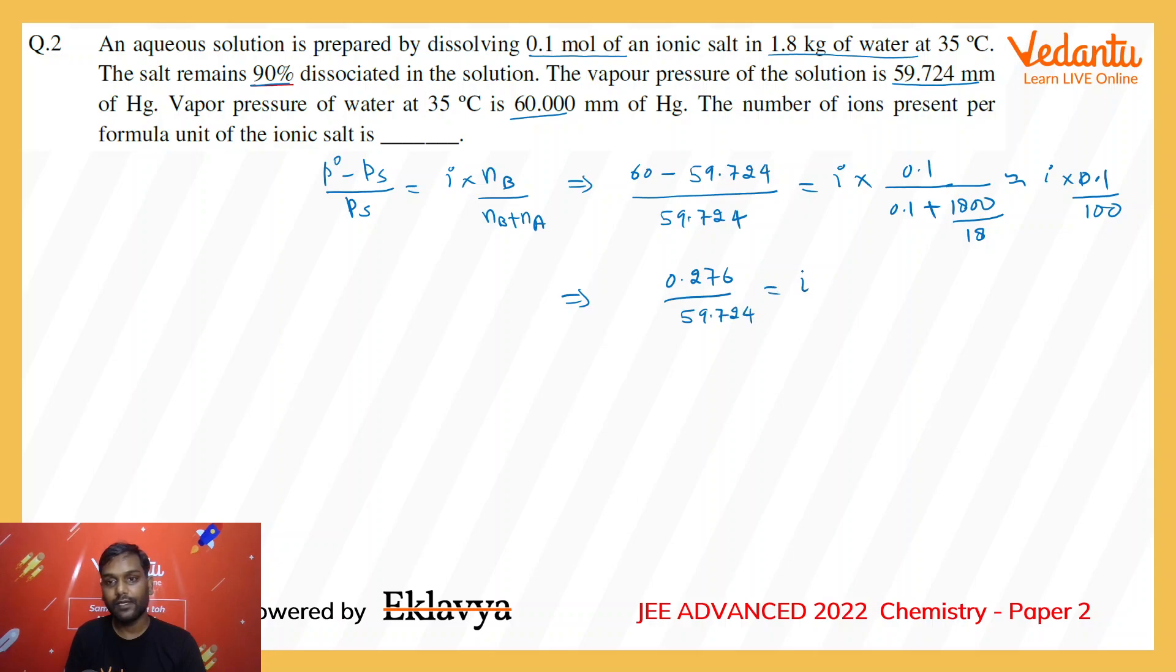From this, the van't Hoff factor comes out to be 4.62 on calculation. So directly we can use the formula of van't Hoff factor for the case of dissociation, that is i = 1 + α(n - 1).